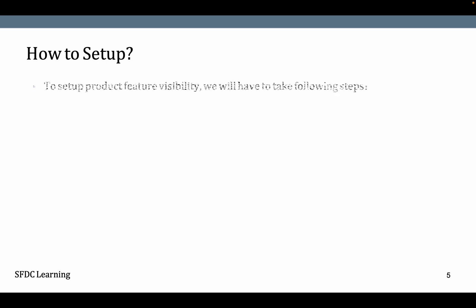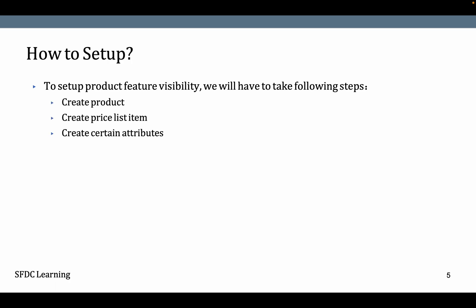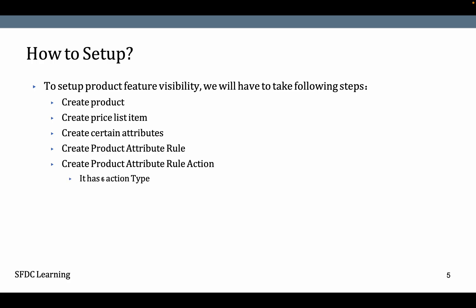To set up product feature visibility using product attribute rule, first you have to define the product, pricelist item, and attributes, and associate them with the product. Then you define the product attribute rule and product attribute rule action, which has six action types: allow, default, hidden, disable, required, and reset. These types are self-explanatory.